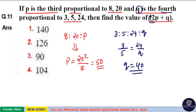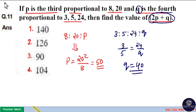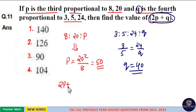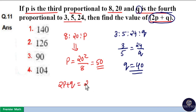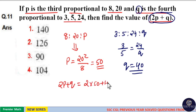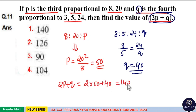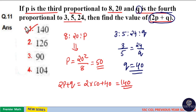Now we need to find the value of 2P plus Q. So 2P plus Q equals 2 times 50 plus 40, which equals 140. So the answer is option 1.